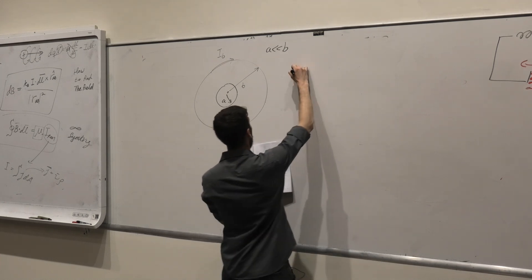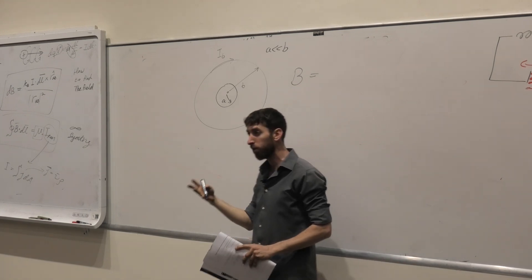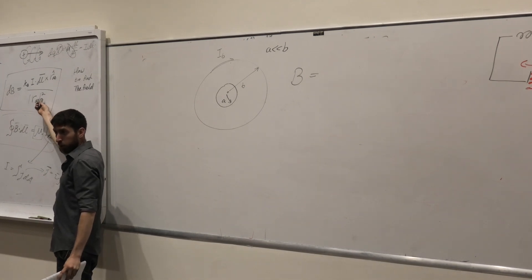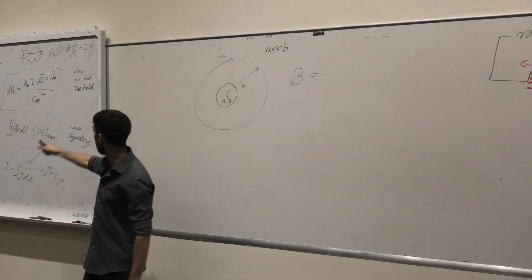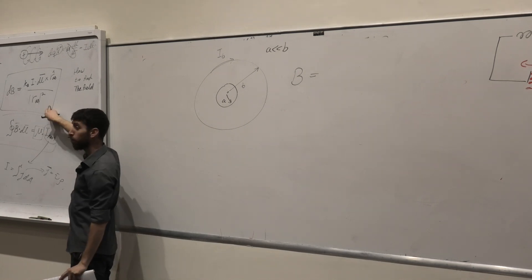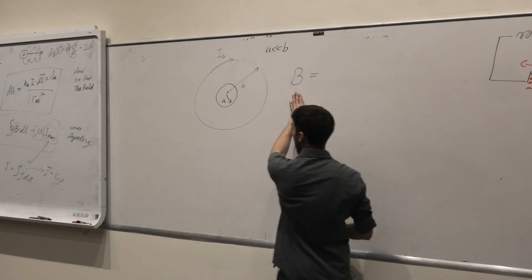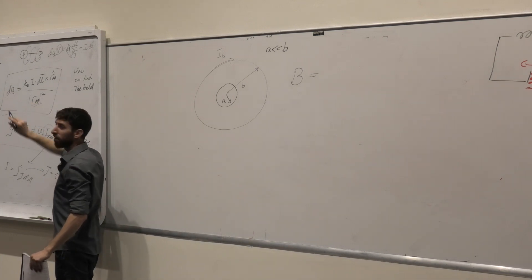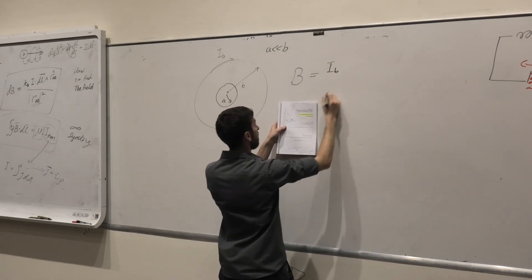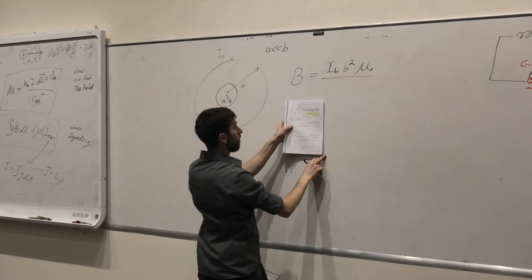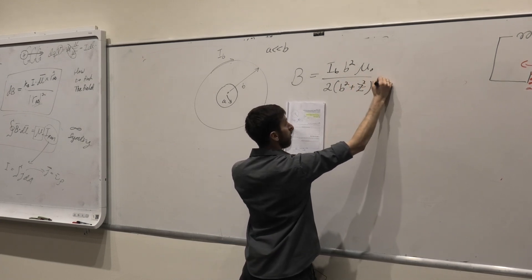What is the magnetic field of a ring? I want you to have this in your sheet formula. The magnetic field, you can find it using which law? Use Biot-Savart law. So let's give you the formula equation. The question is, Ib, b squared, mu naught 2, b squared, plus the height above the ring.